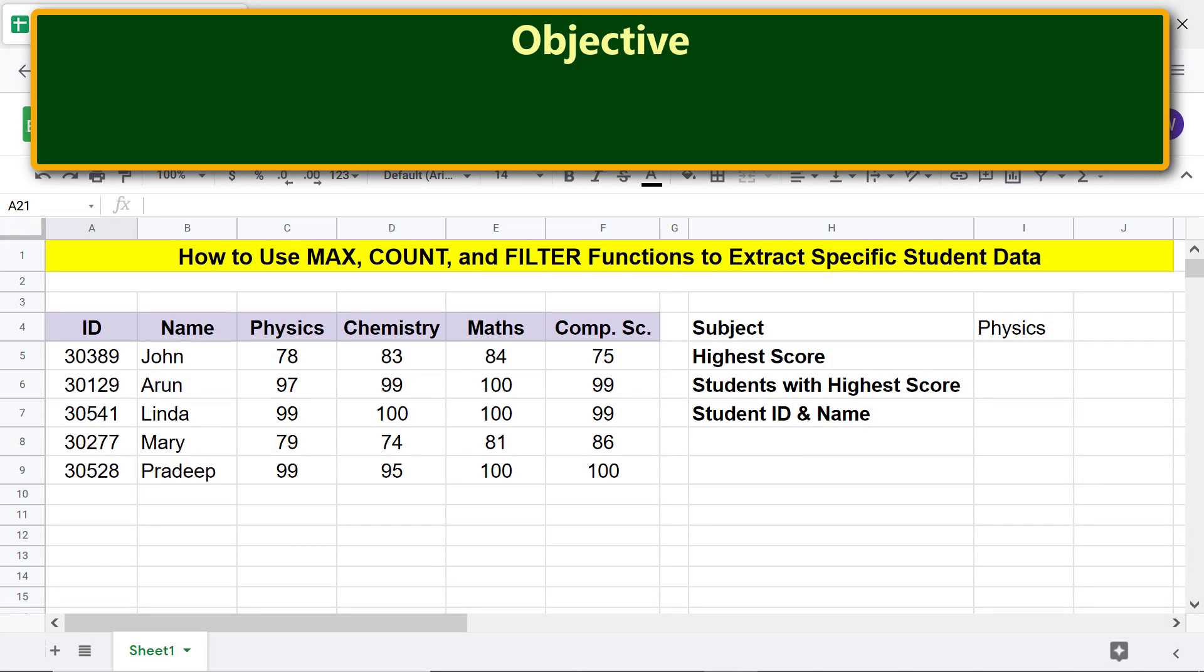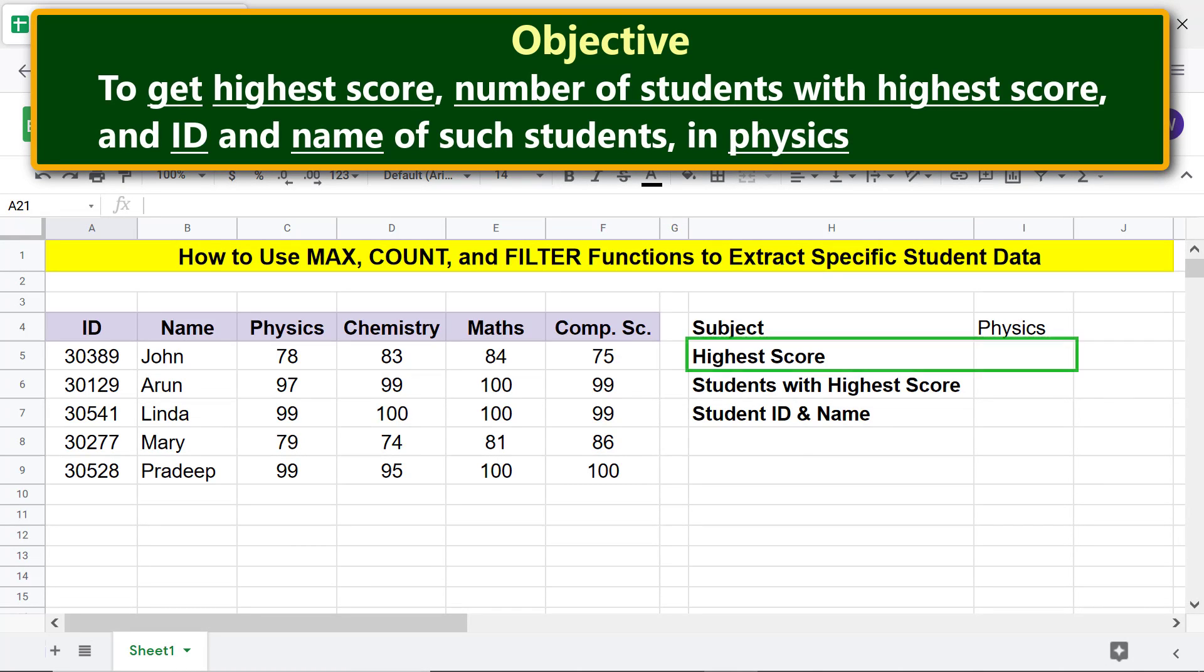Using MAX, COUNT, and FILTER to get highest score, number of students with highest score, and ID and name of such students in physics. Here is a solution, one each for the three objectives. To get the highest score, let's use the MAX function.